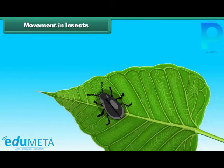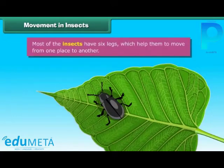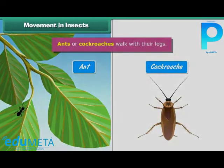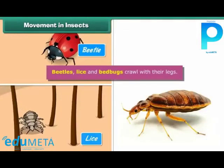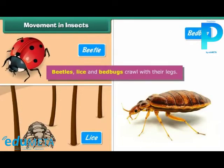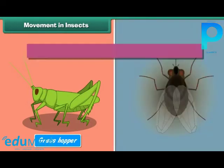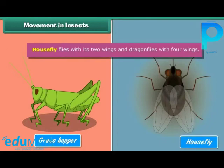Movement in insects. Most insects have six legs which help them move from one place to another. Ants and cockroaches walk with their legs. Beetles, lice, and bed bugs crawl with their legs. Some insects have strong hind legs which help them in hopping. Many insects have wings and can therefore fly. House flies fly with two wings and dragonflies with four wings.